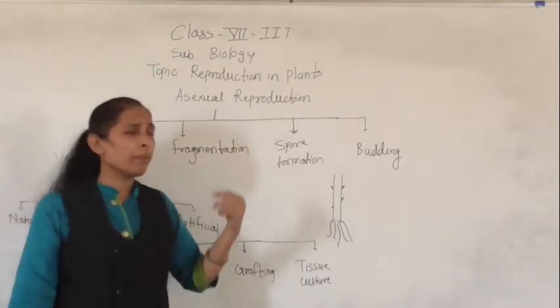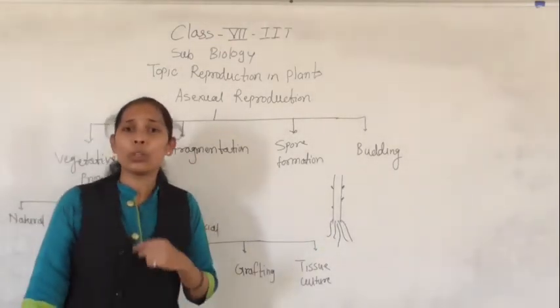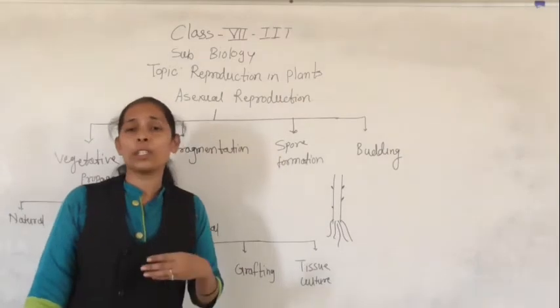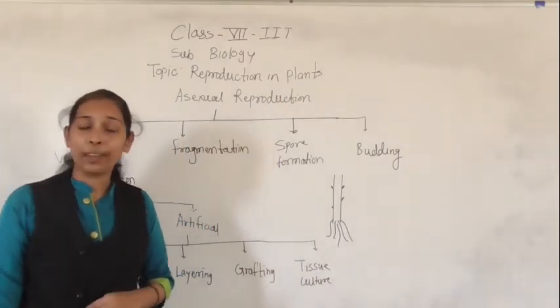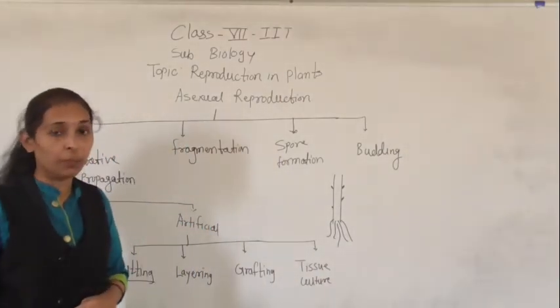Cutting is basically used for rose, bougainvillea, jasmine, and sugarcane.